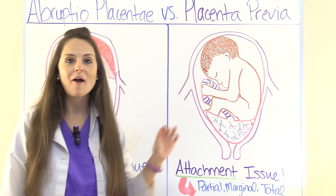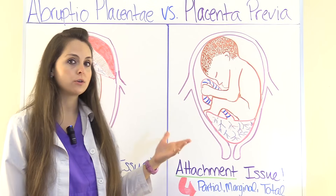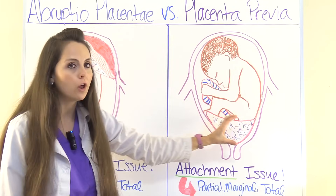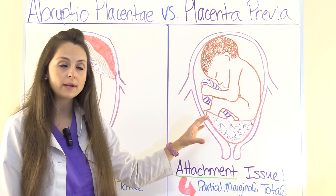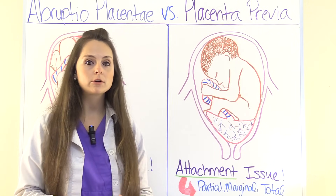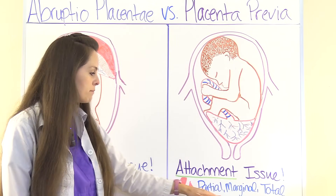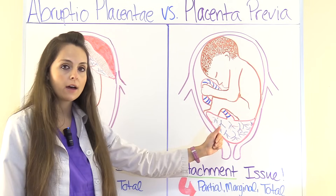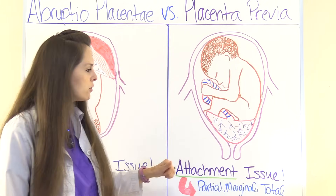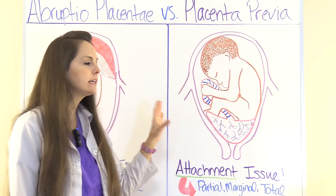Now let's look at Placenta Previa. This is an attachment issue — the placenta hasn't attached where it's supposed to. It's supposed to attach in the top part of the uterus or the side, but instead it attaches somewhere low in the uterus, usually over the cervical opening. That causes issues with the placenta becoming damaged and it can bleed and hemorrhage. You can have partial, where it's partially covering the cervical opening, marginal where it's at the edge, or total where it's completely covering the cervical opening.